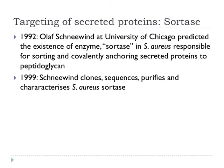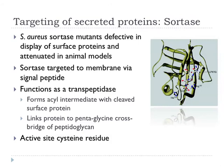That was a very nice example of predictive biology, because he made this prediction in 1992, worked away in his lab for several years, and in 1999 actually showed that this protein existed — this enzyme existed — by cloning it, sequencing it, purifying it and characterizing it. That was a very nice conclusion to that line of thought. It's clear from his initial studies that sortase was important because if you made a sortase mutant, the bacteria are defective in the display of surface proteins and are very attenuated in animal models.